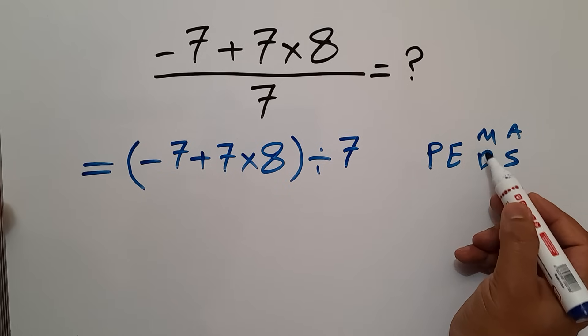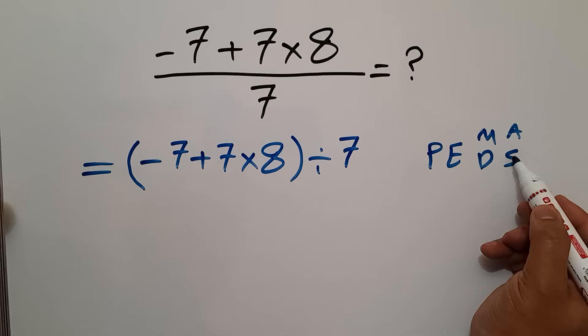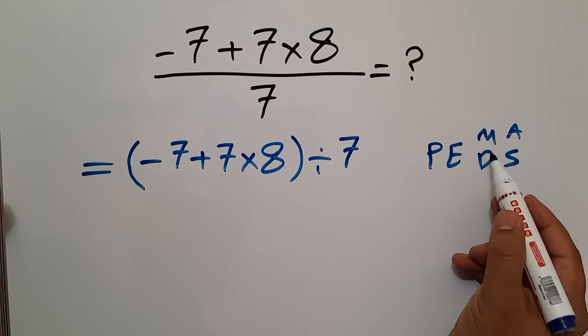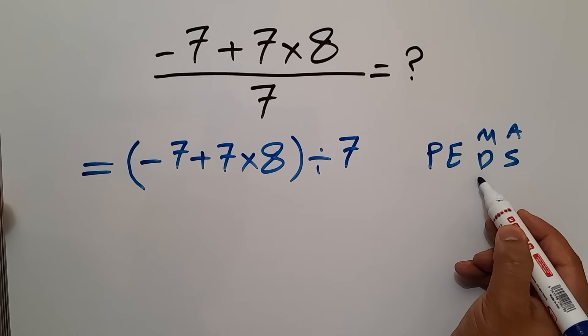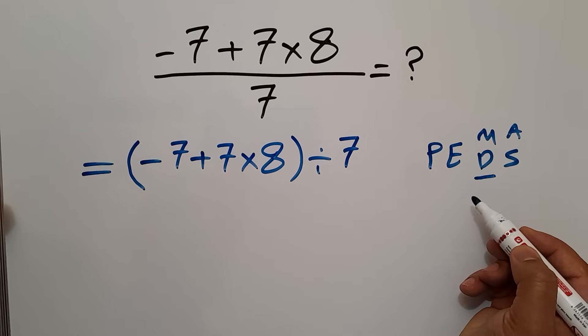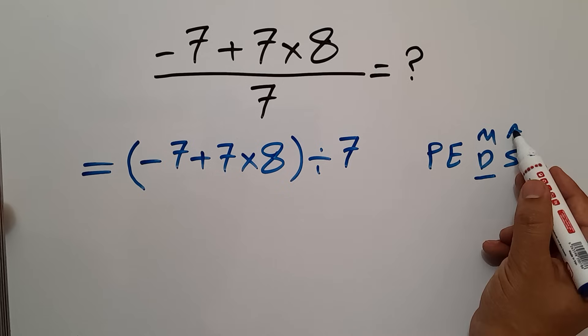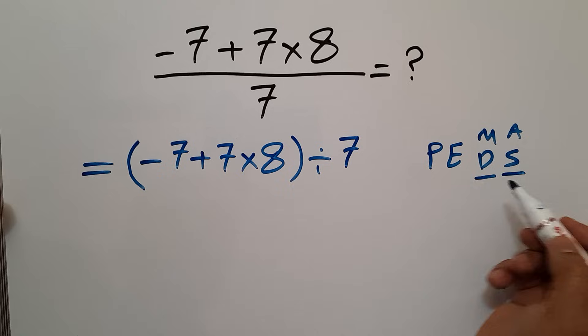and finally addition or subtraction. Remember that multiplication and division have equal priority, and we have to work from left to right. And the same applies to addition and subtraction.